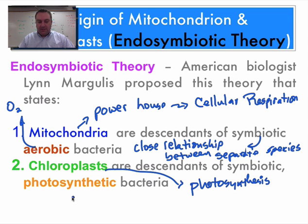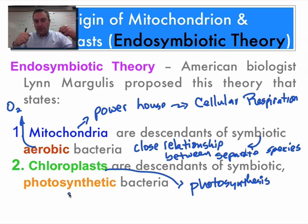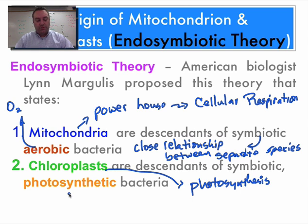Chloroplasts are descendants of photosynthetic bacteria. Photosynthesis involves using light to combine carbon dioxide and water together to form sugars like glucose. That should all just be a review — we covered those topics in the first semester.